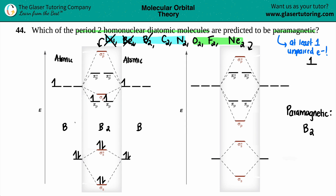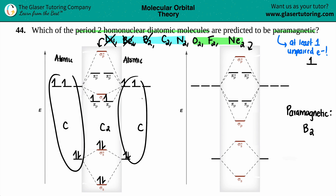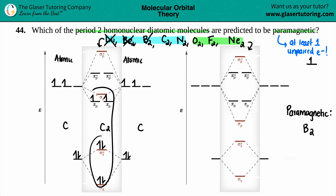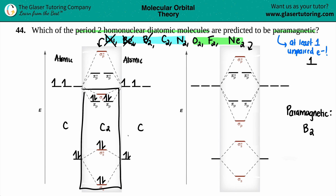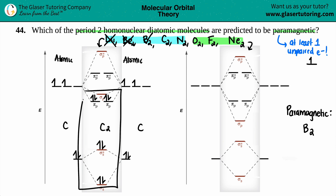Moving to C₂: carbon has four valence electrons, so four plus four equals eight total. We already have six, so we add electrons seven and eight. When we double back to fill the degenerate orbitals, both end up paired. There are no unpaired electrons in the molecule, so C₂ is diamagnetic.